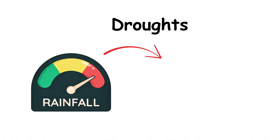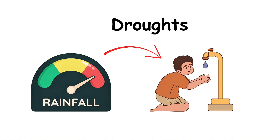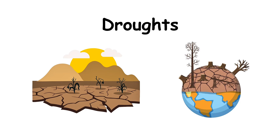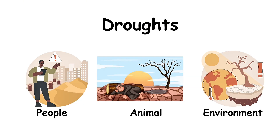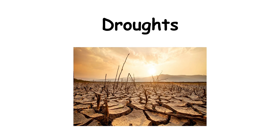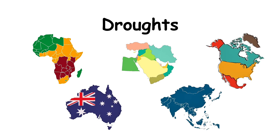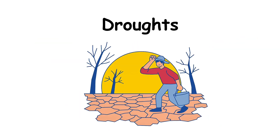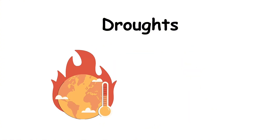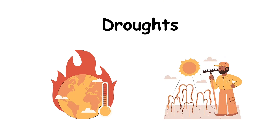Droughts. A drought happens when an area experiences a long period of unusually low rainfall, leading to a shortage of water. It can last for months or even years, severely affecting people, animals, and the environment. Droughts can occur anywhere in the world, but they are most common in dry regions such as Africa, the Middle East, and parts of North America, Australia, and Asia. Scientists monitor droughts using rainfall records, soil moisture sensors, river and reservoir levels, and satellite data. These tools help track water shortages and predict the severity of drought conditions.